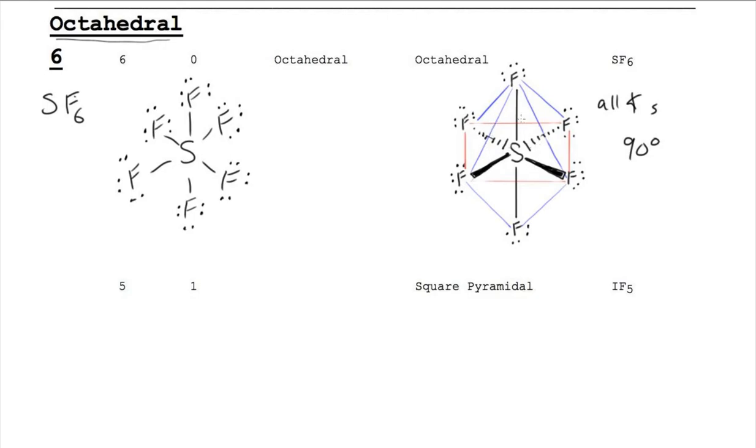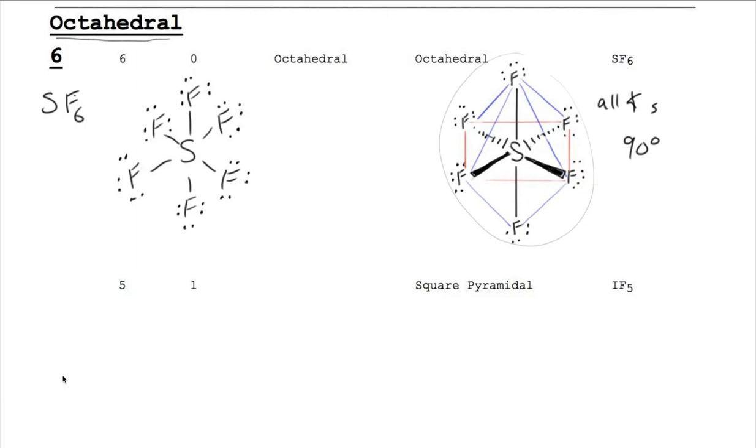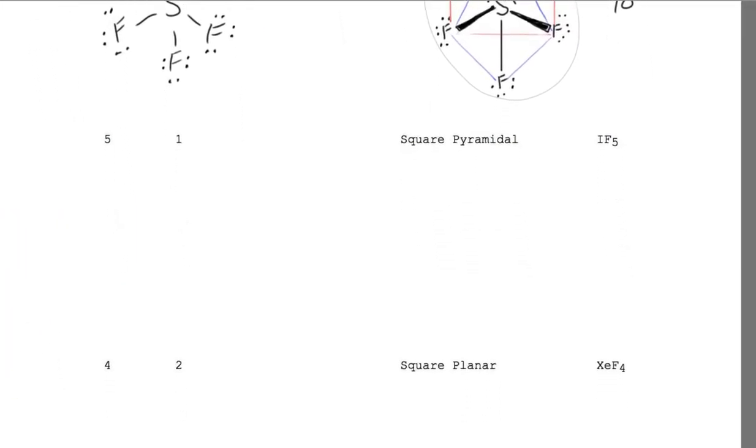One, two, three, four, five, six. That could be six bonds, as we see here. Or, it could be five bonds and a lone pair, as we'll see in IF5, iodine pentafluoride.